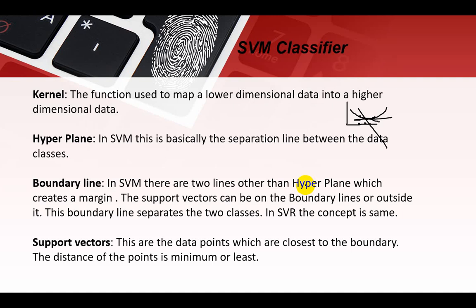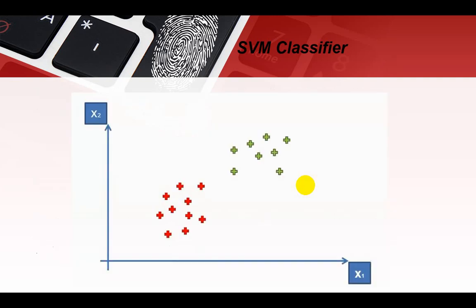Finally, what is the support vector? These are the data points which are closest to the boundary. The boundary's closest data points are called the support vector. The distance of the point to the boundary line is minimum or least.